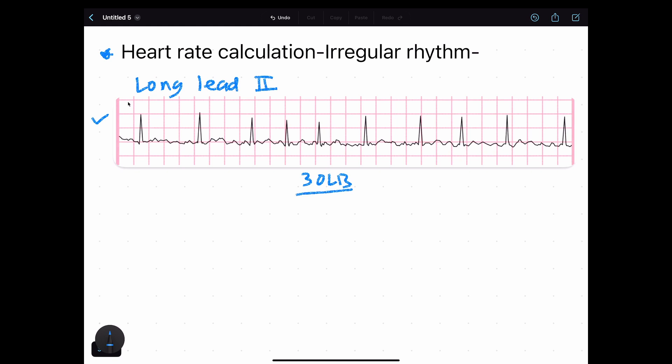This rhythm strip is 30 large boxes long, which means it is six seconds. So we have to calculate the number of R spikes over this period.